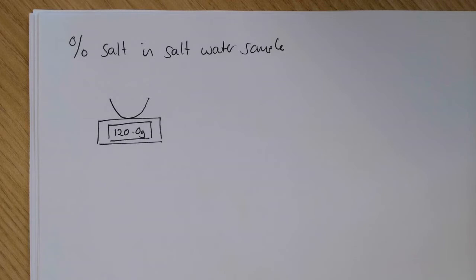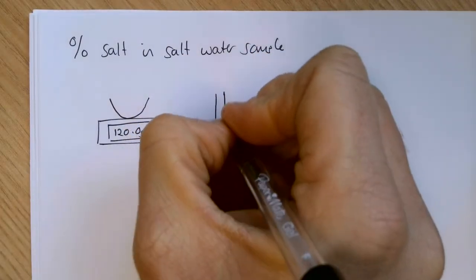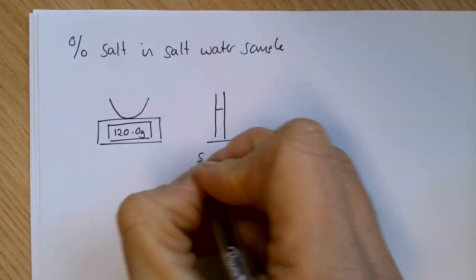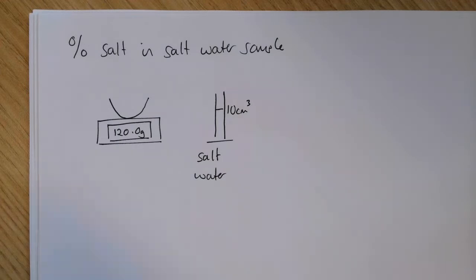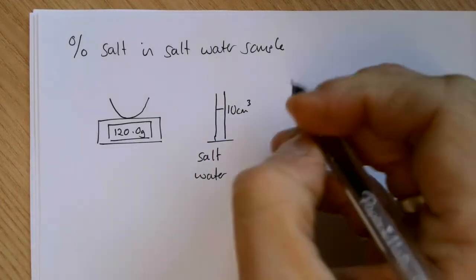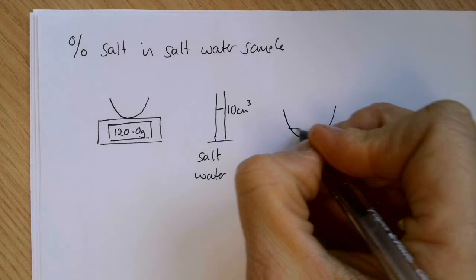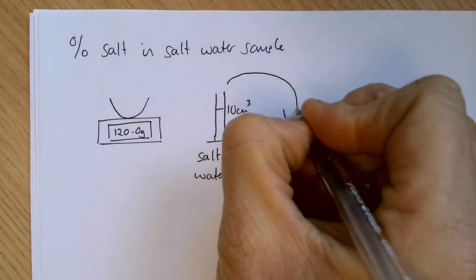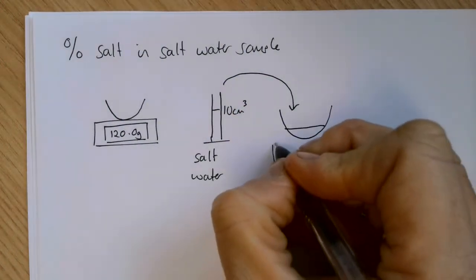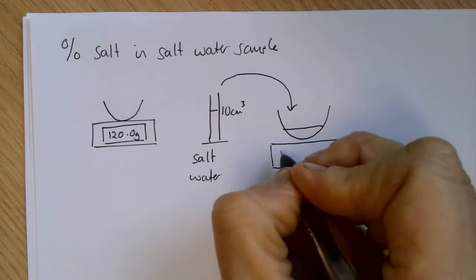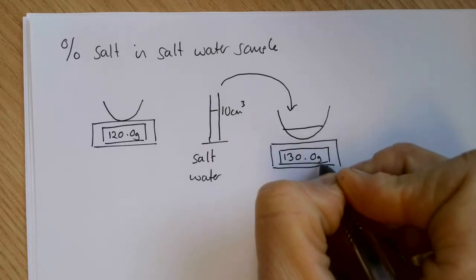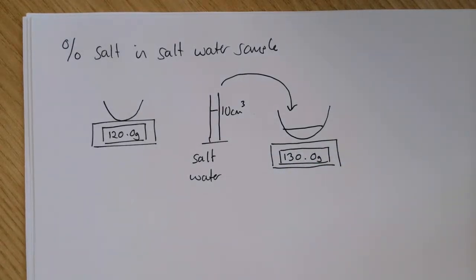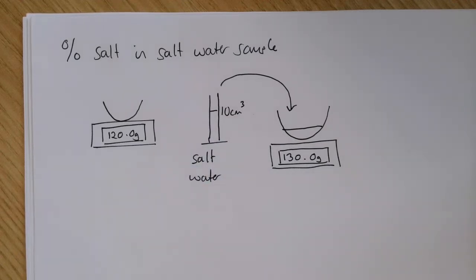We would then take our salt water sample, 10 cubic centimeters of our salt water sample measured out using a measuring cylinder, and pour this into the pre-weighed crucible and find the mass. We would expect about 10 grams. In my example here, it's exactly 10 grams.